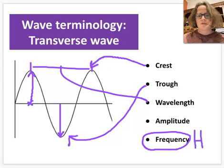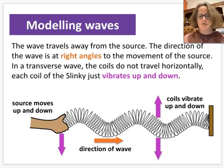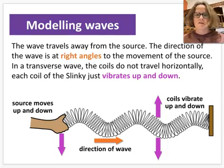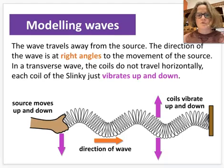A great model for waves is a slinky, which you'll get to play with in class. As the wave travels away from the source, the direction of wave travel is at right angles to the movement of the source. The coils don't actually travel with the wave — they move up and down. The handle moves up and down, and the wave moves to the right, but the coils themselves just move up and down.